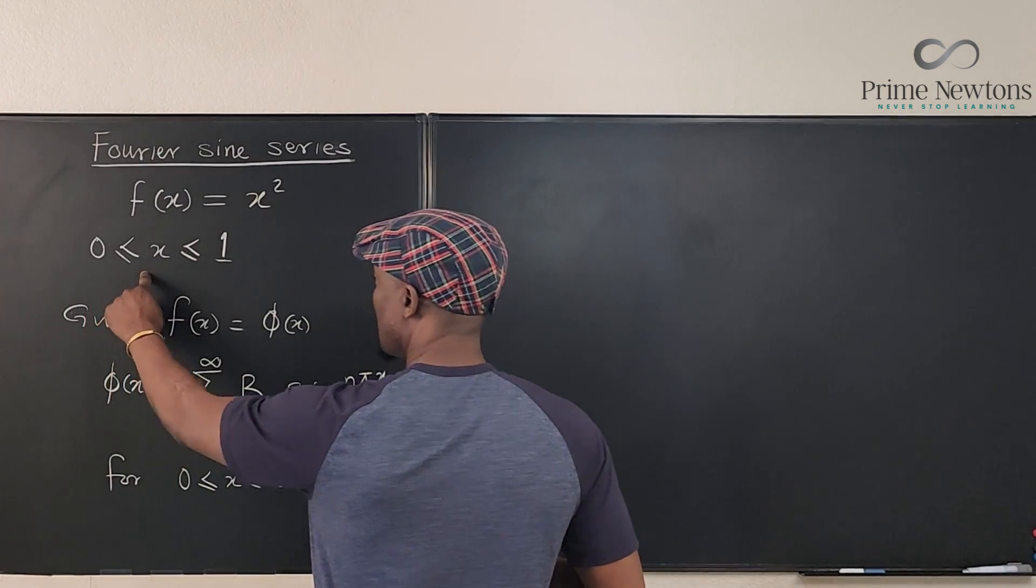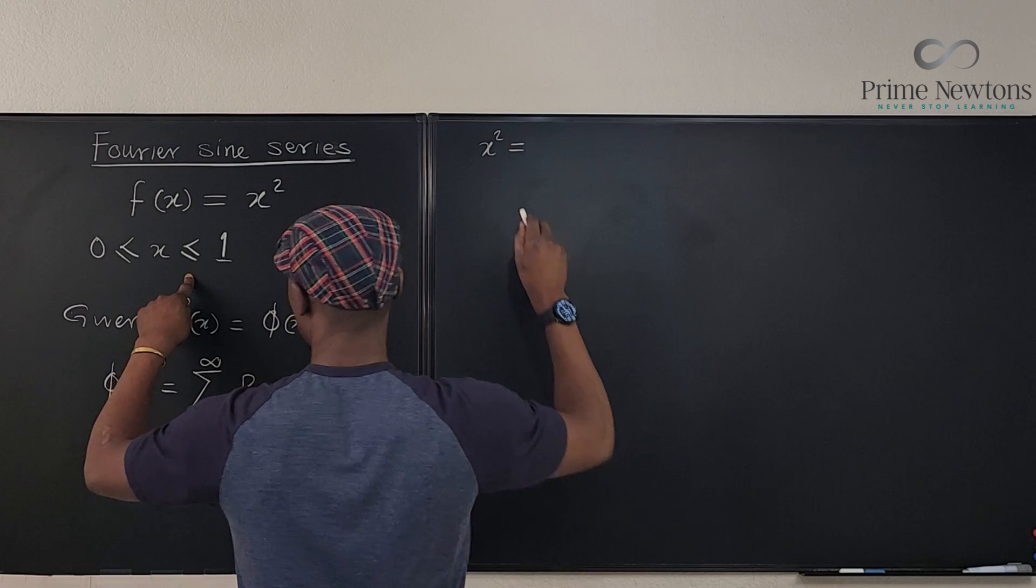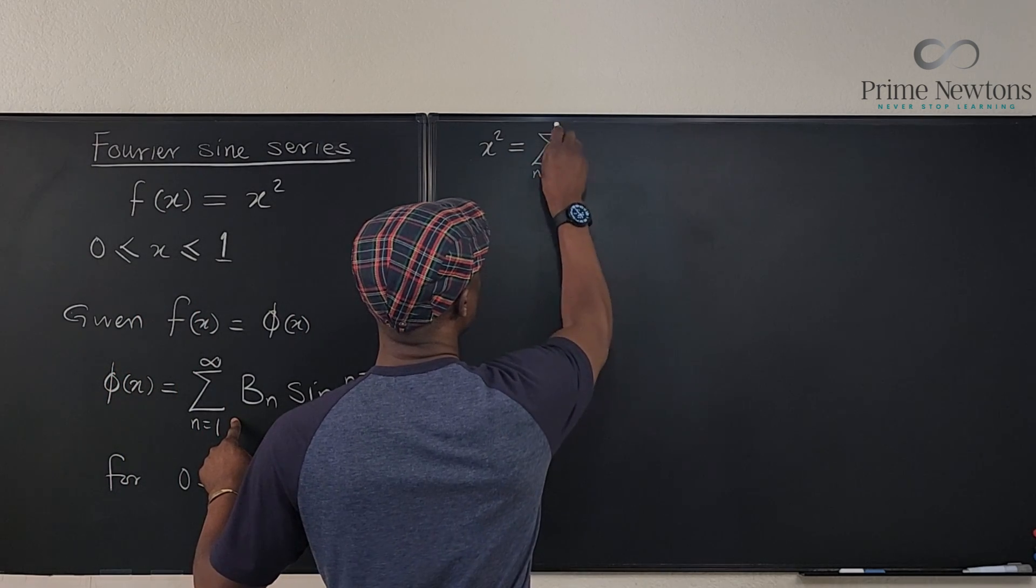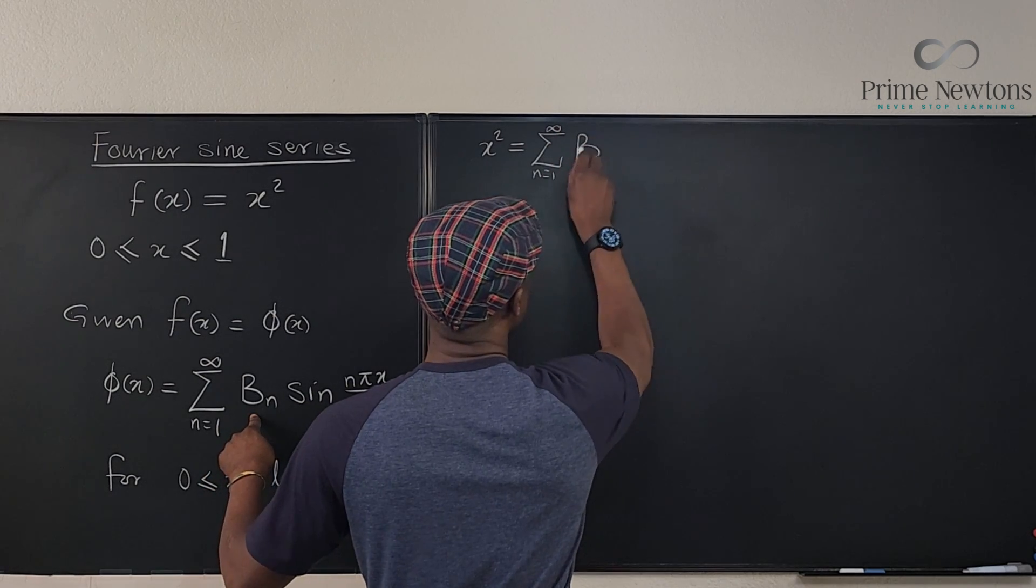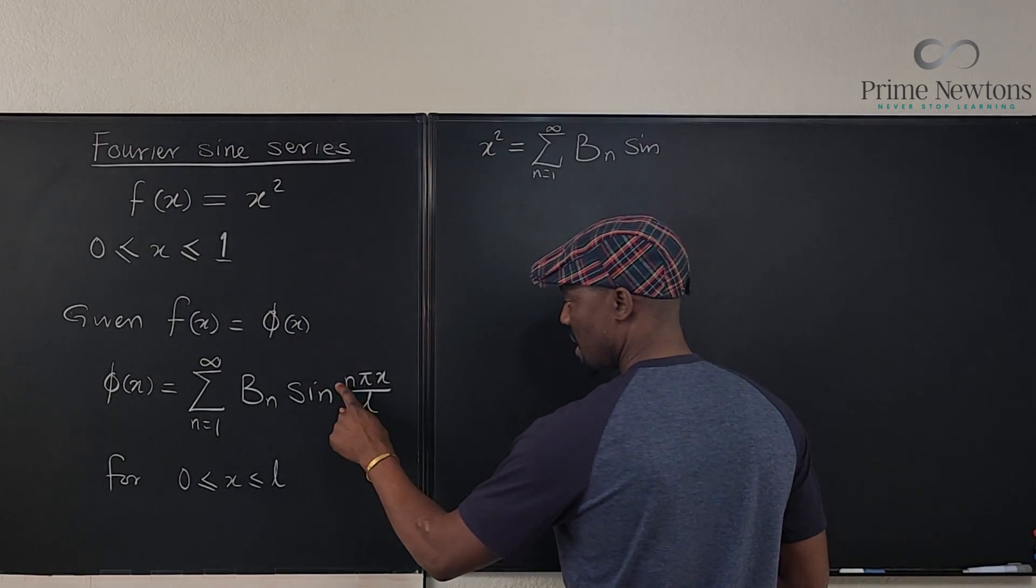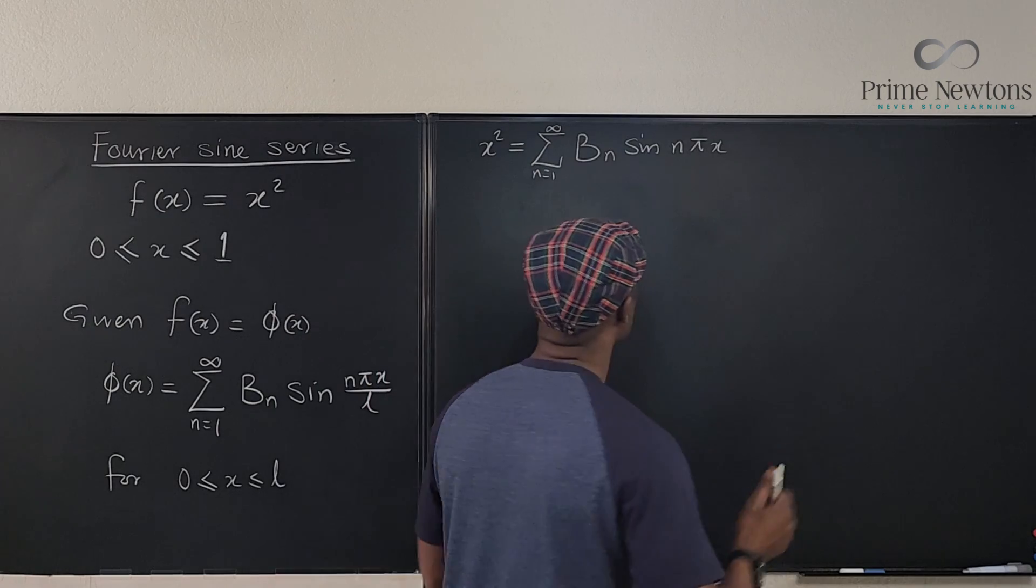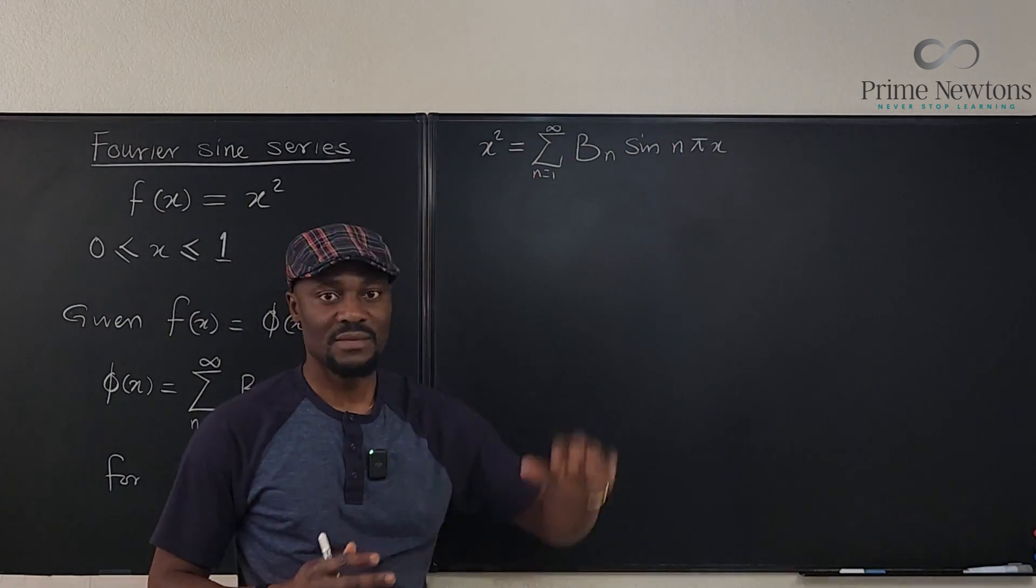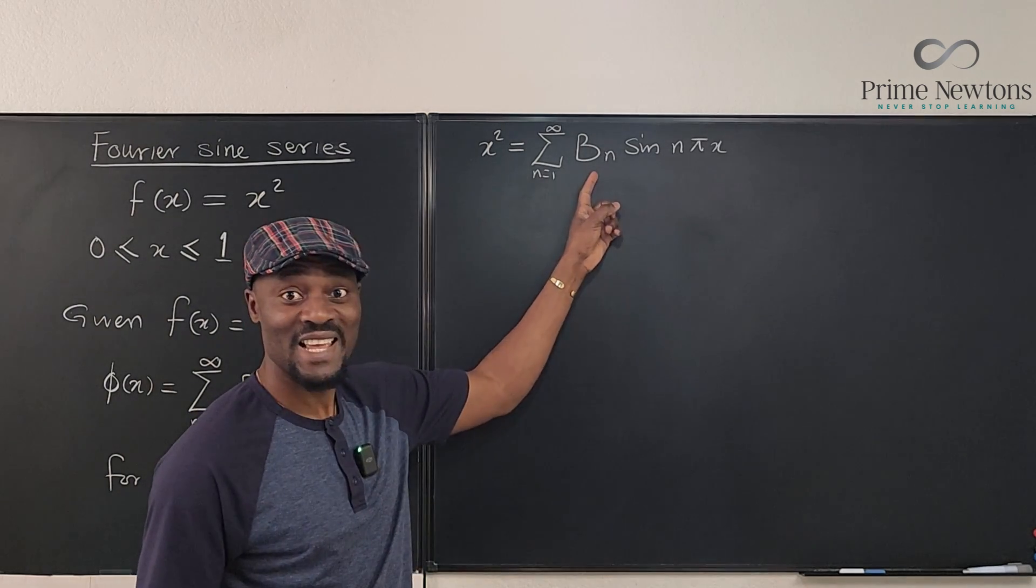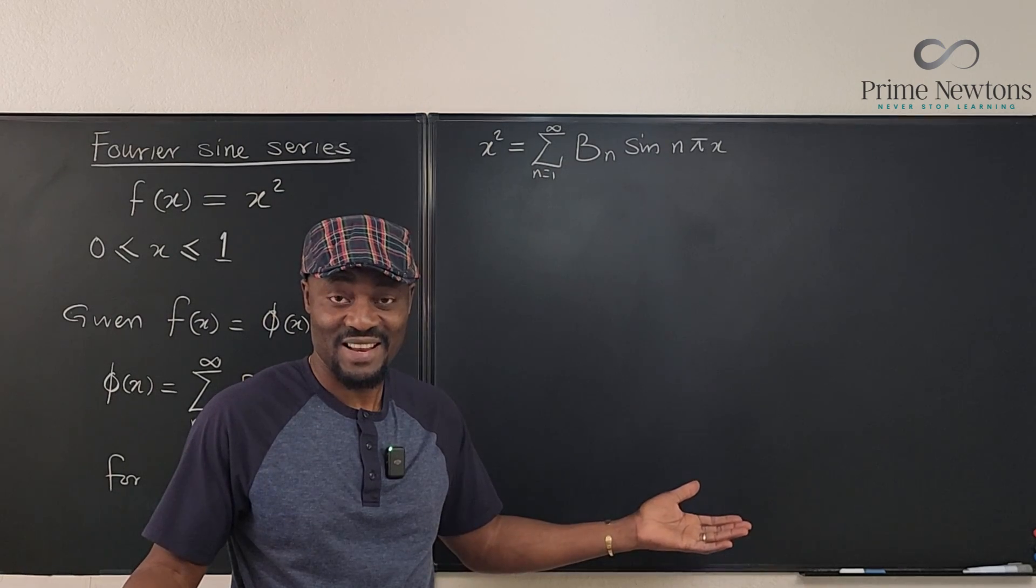We know, based on what we have done, that x squared will be equal to the sum from n equals 1 to infinity of b sub n sine. Since we know that l is 1, this is going to be n pi x, and we're done. We just need to know what b sub n is.